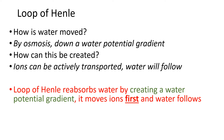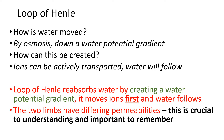What is crucial to understanding the Loop of Henle is that you have a descending and ascending limb and they have different permeabilities. Remembering these different permeabilities is crucial - if you can remember those different permeabilities, then you will remember the Loop of Henle.